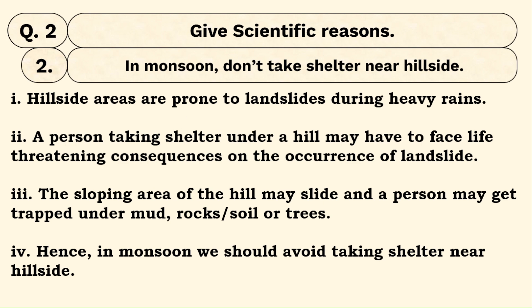Second scientific reason: in monsoons, don't take shelter near a hillside. In hilly areas, landslide is more common, and during monsoons when heavy rains occur, the chances of landslide increase further. During heavy rains, a person taking shelter near a hill faces life-threatening danger due to landslide. The sloping area of the hill can slide, and the person may get trapped under mud, rocks, soil, or trees. So in monsoon we should avoid taking shelter near hillsides.